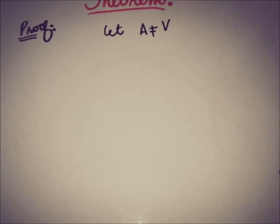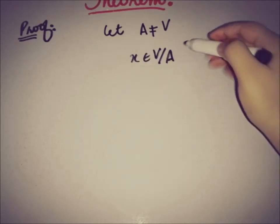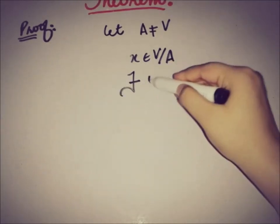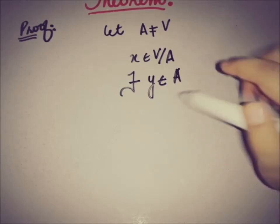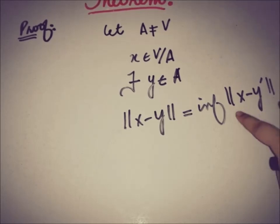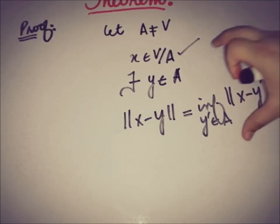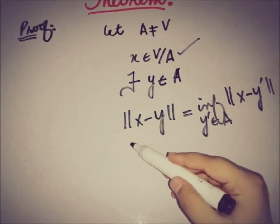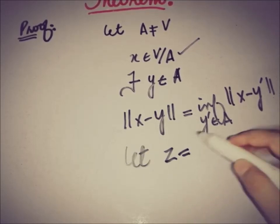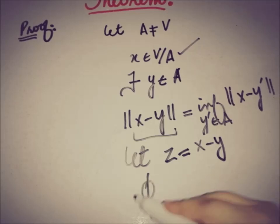Let A not equal V. From the previous video on the minimizing vector theorem, if we take an element x from V but not from A, there exists a unique element y in A such that the norm ‖x - y‖ equals the infimum of ‖x - a‖ over all a in A. We will use this minimizing vector theorem to prove today's theorem. Let z = x - y.